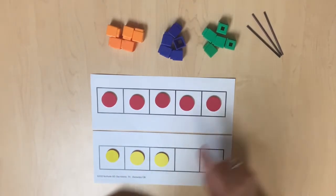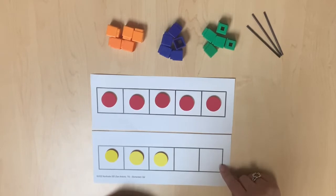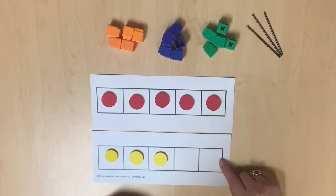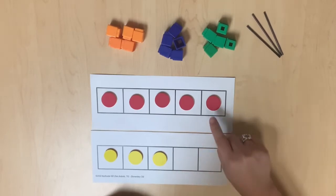The red set has more than the yellow set. The frame with 5 red counters has a greater number of objects than the frame with 3 yellow counters. 3 is less than 5.